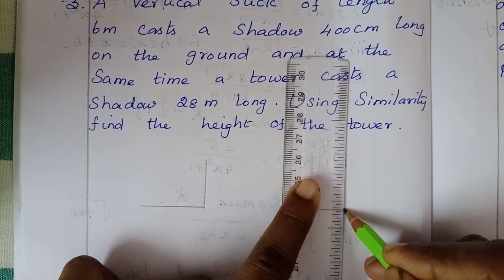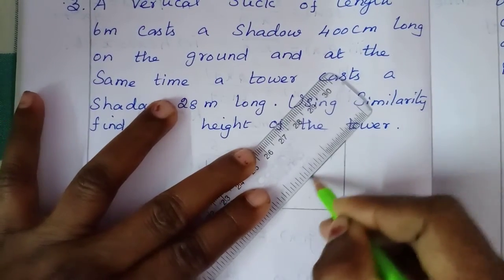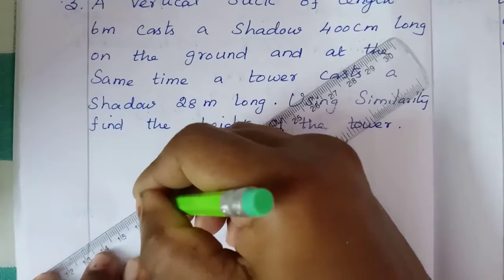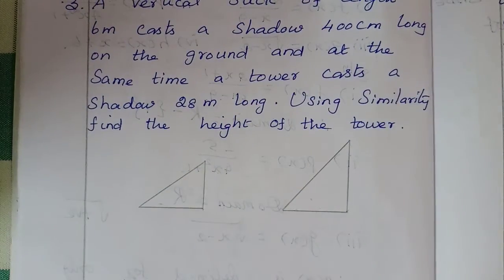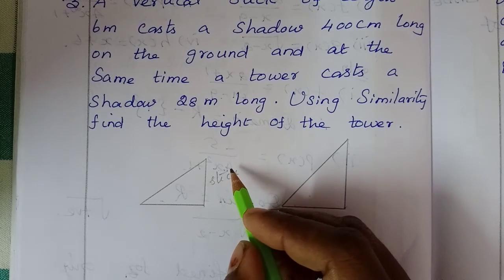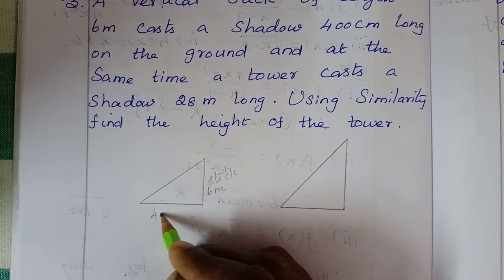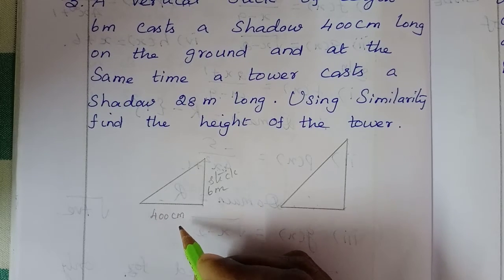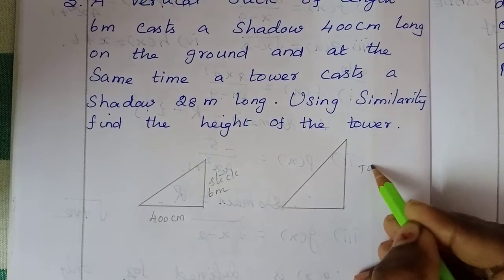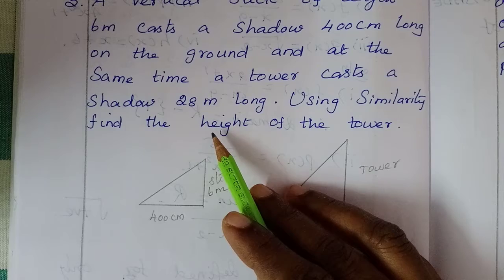Tower, so the tower's shadow and stick's shadow fall on the ground at the same time. Now stick of length is 6 meter, so this is 6 meter. Shadow of length is 400 centimeter. So this is the tower. Tower height is unknown. The shadow is 28 meter.